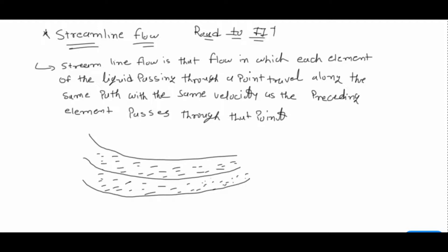Let's take the middle path — I have drawn three different particles or points on that particular flow. In streamline flow, if you draw a tangent to that point, as I am drawing now, it gives you the velocity direction at that particular point. The tangent gives the direction of flow of the liquid at that point.